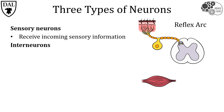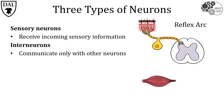The second neuron type are interneurons. They receive their input from and send their output to other neurons, so the communication is exclusively with other neurons. Interneurons are responsible for all the tasks that don't involve direct sensory input or direct motor output.